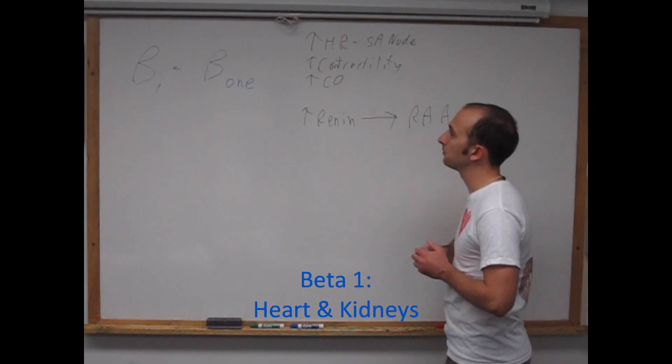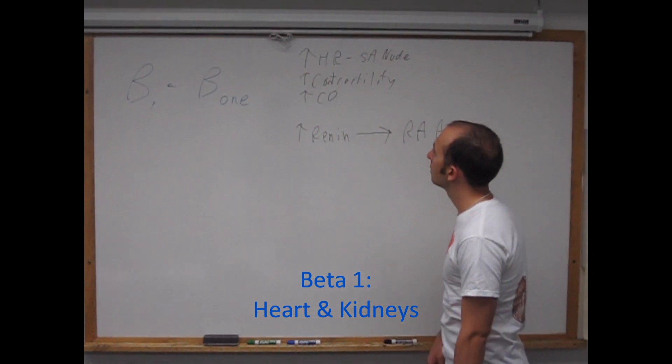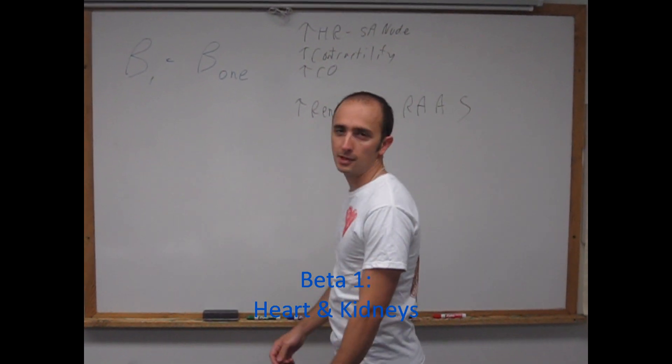So, beta-1: heart and kidneys. That's basically all you need to know.